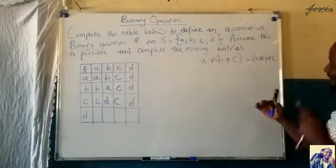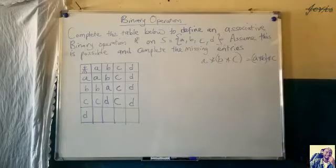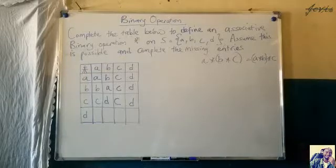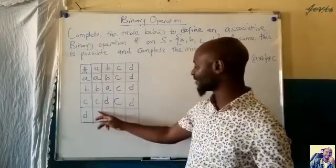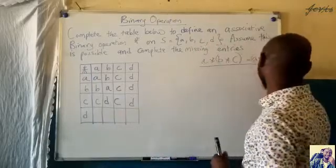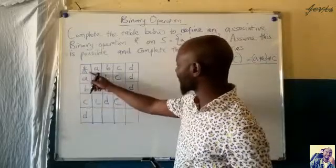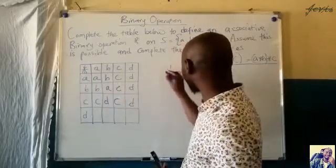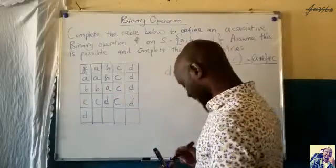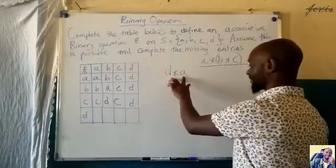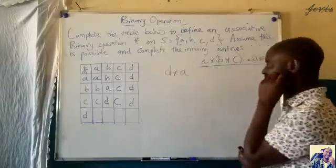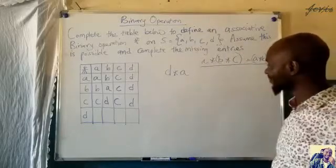So we can group — if we are operating more than three items — we can associate them, work them out, associate the other items, work them out, and the answer should be the same. Now we can't use commutativity here, so we have to use associativity. How do we use it? We can eliminate one element from these two which we feel is not helping us.